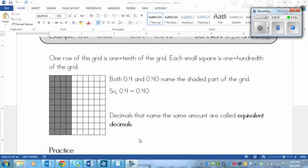And so decimals that name the same amount are called equivalent decimals, just like fractions that name the same amount are called equivalent fractions. I know it's a big word, and it seems scary, but this isn't scary, is it?